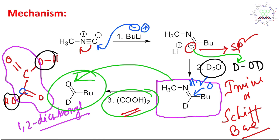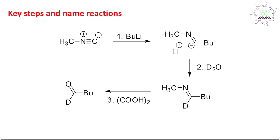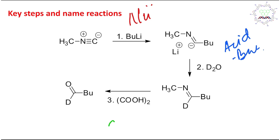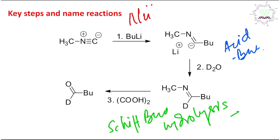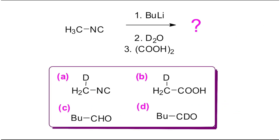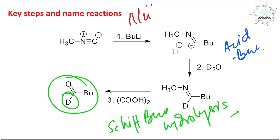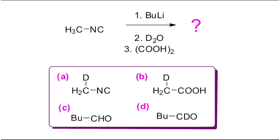So this produces a deuterium-bearing aldehyde. To summarize the key steps and name reactions: the first step is nucleophilic addition on the isocyanate carbon; the second step is an acid-base reaction with D₂O; and the third step is Schiff base hydrolysis to produce the corresponding aldehyde. The final answer is a 5-carbon aldehyde — butanal with deuterium at C1, i.e., butyl-CDO.